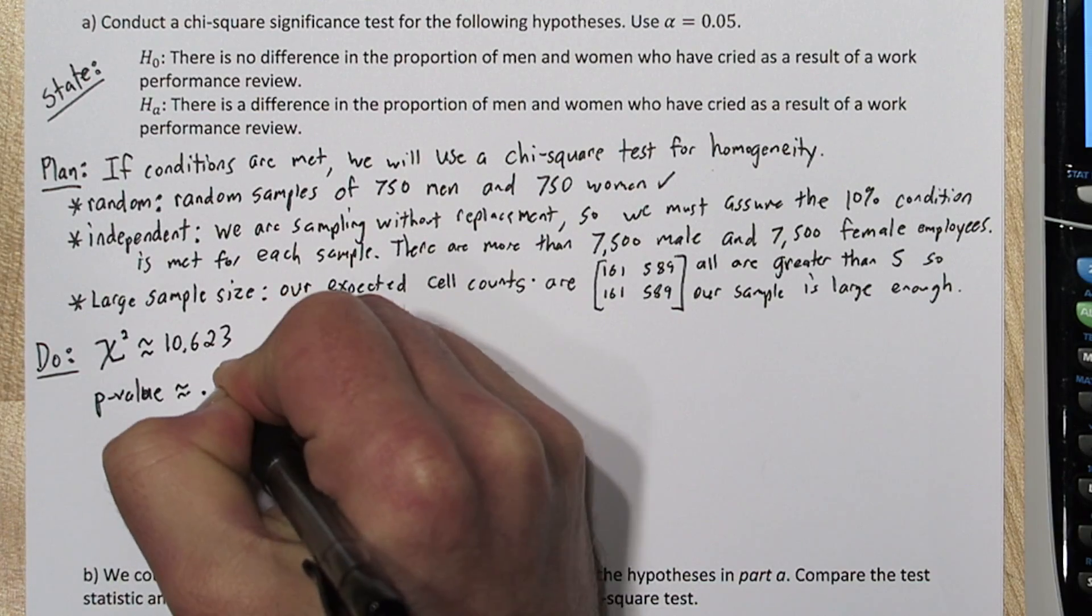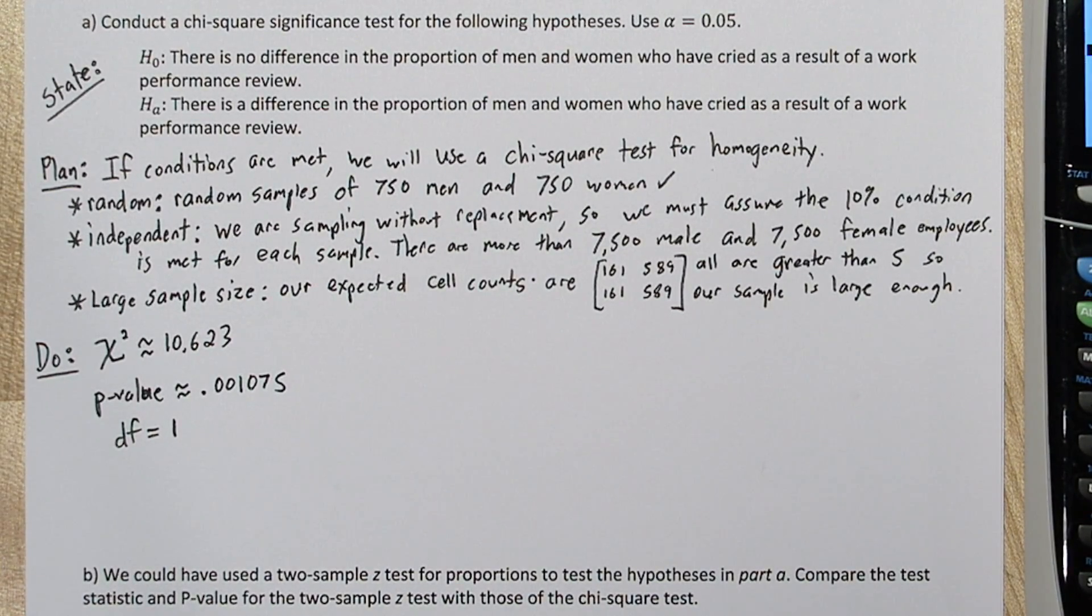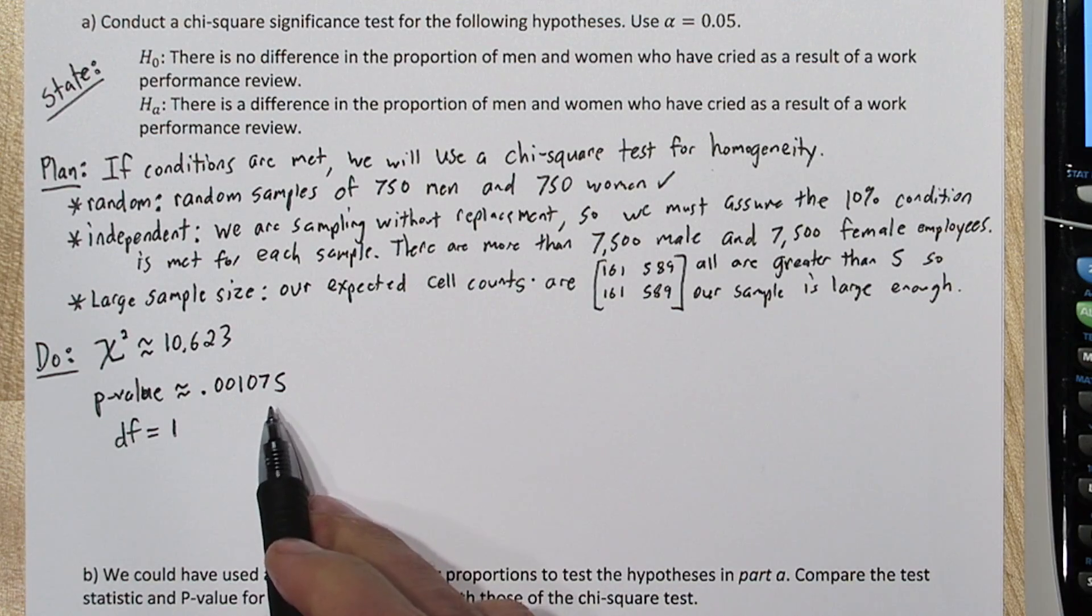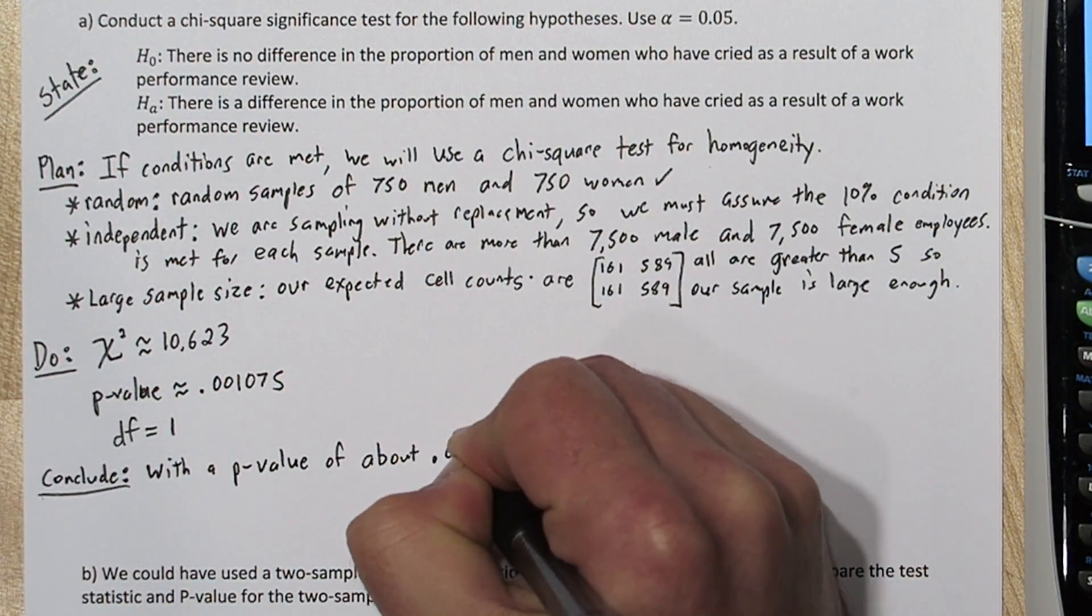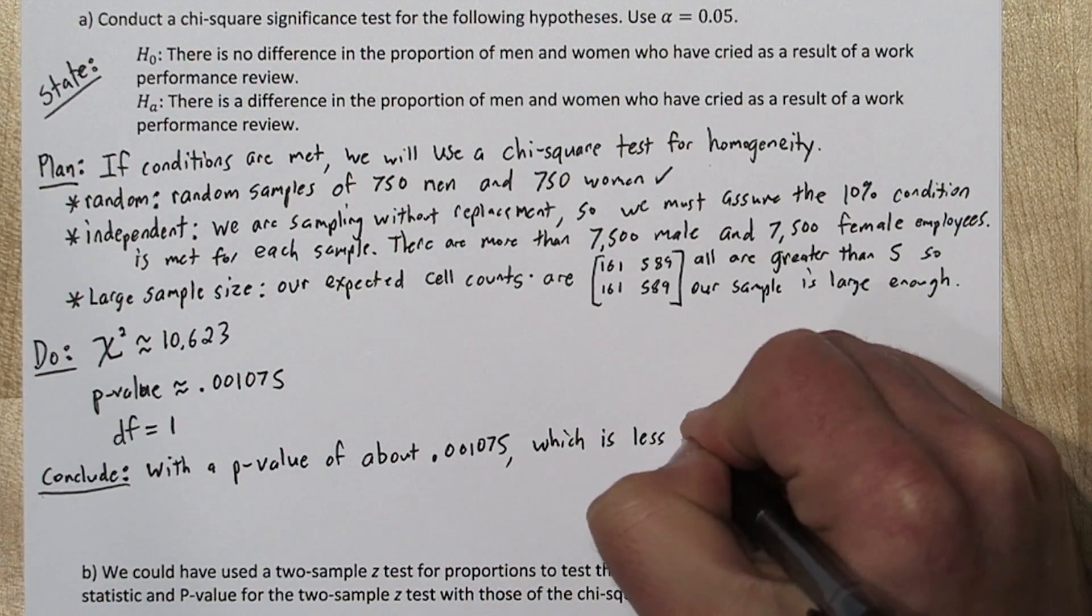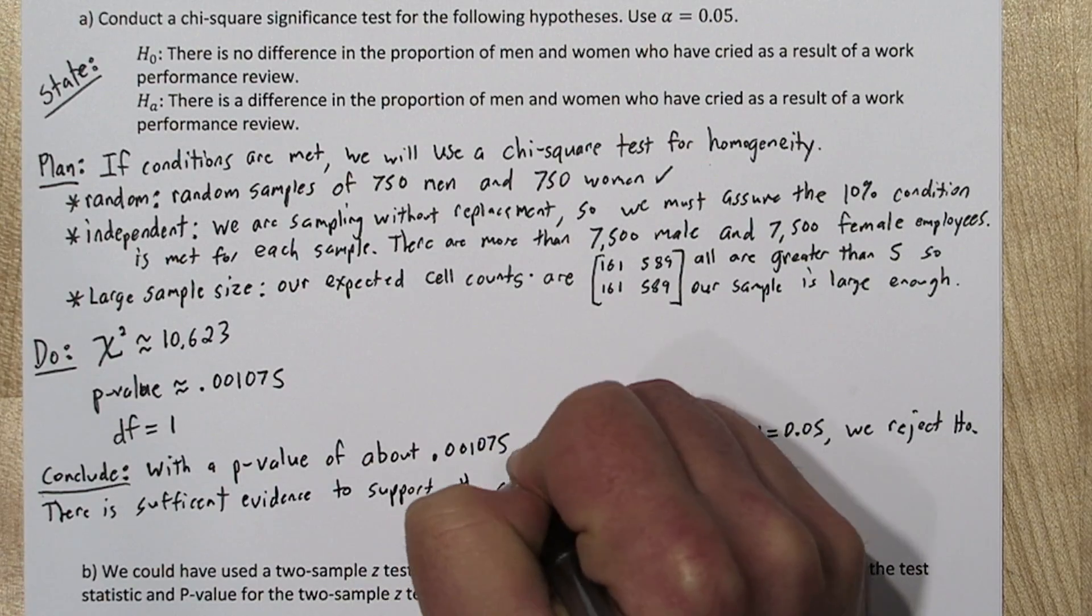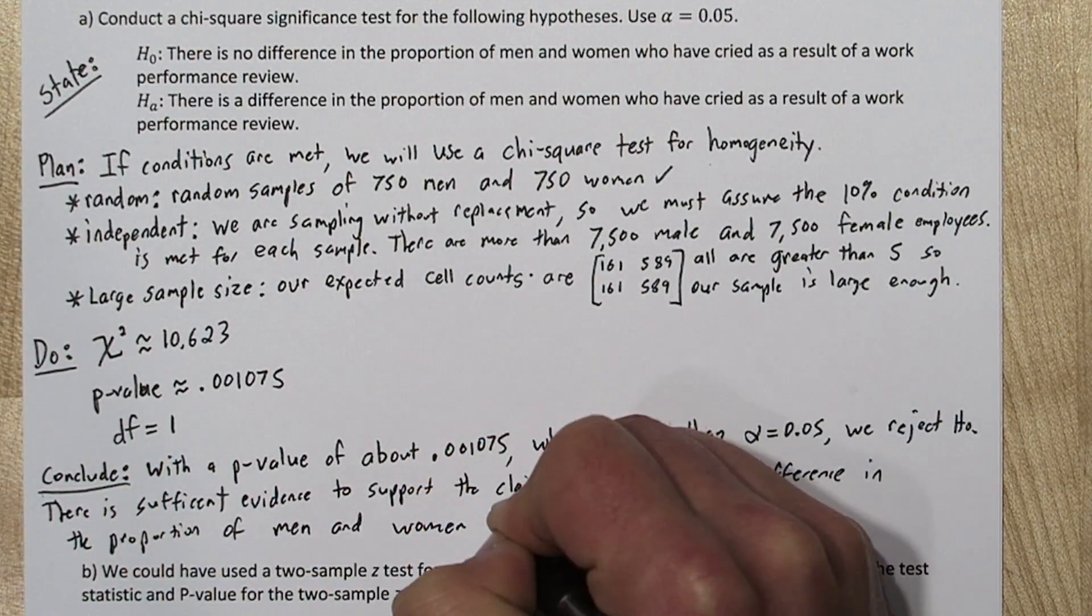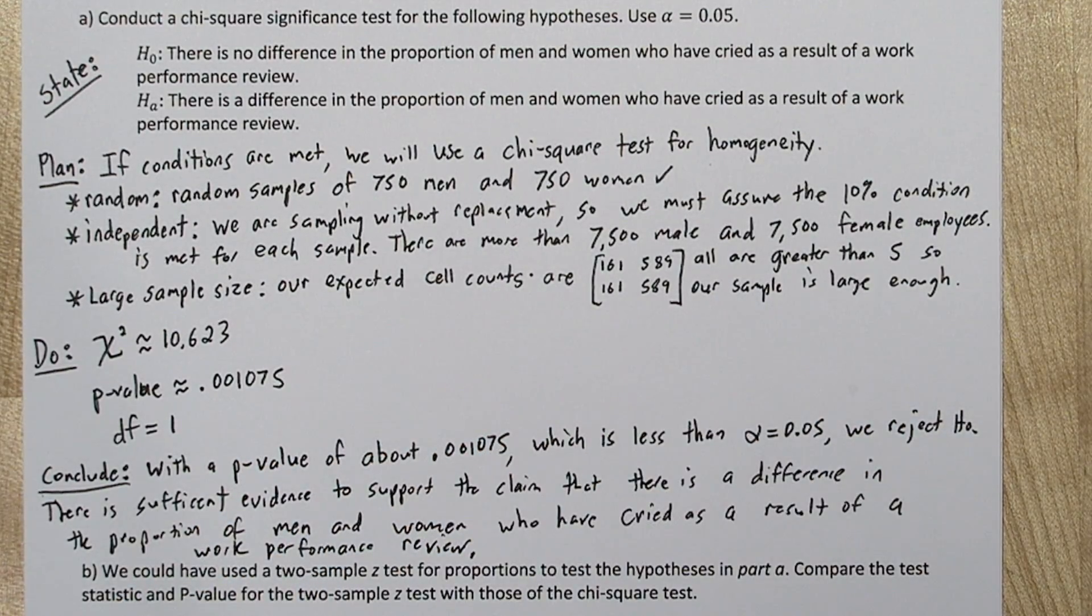Now the p-value represents the probability of us observing results this different if in fact the proportions between the men and the women are the same. So since this value is very low, we're going to reject the null hypothesis. So we're going to say with a p-value of about 0.001075, which is less than our alpha value of 0.05, we reject the null hypothesis. There is sufficient evidence to support the claim that there is a difference in the proportion of men and women who have cried as a result of a performance review.